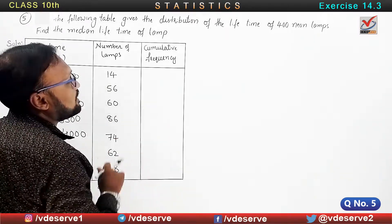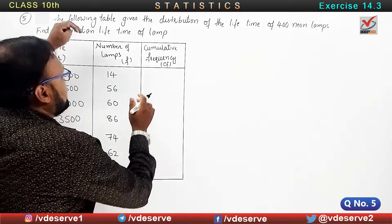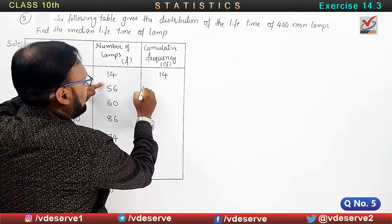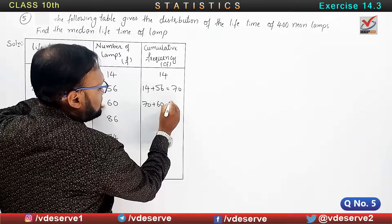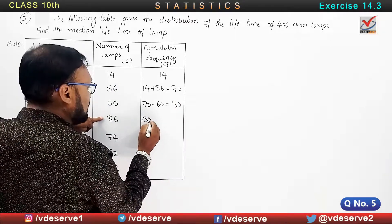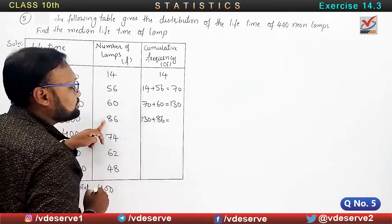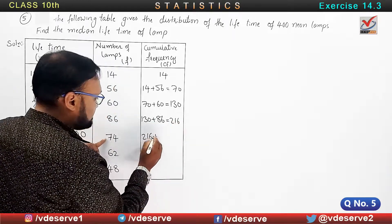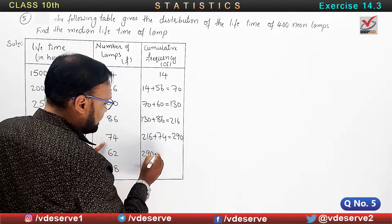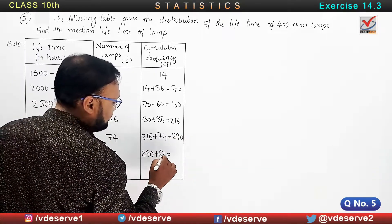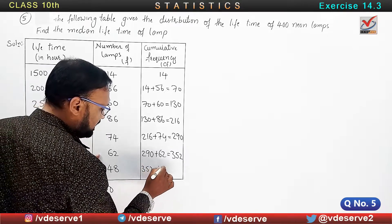The third column is cumulative frequency, CF. How to write the cumulative frequency: the first one is 14 as it is. Second is 14 plus 56. Next, 70 plus 60 is equal to 130. Then 130 plus 86 is equal to 216. Then 216 plus 74, and 290 plus 62 is equal to 352. Now 352 plus 48 is equal to 400.